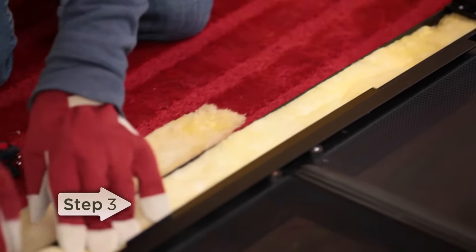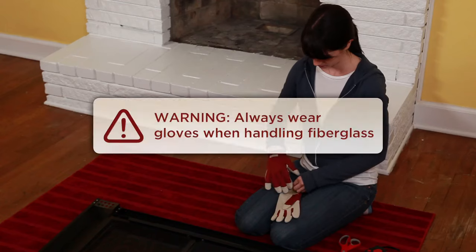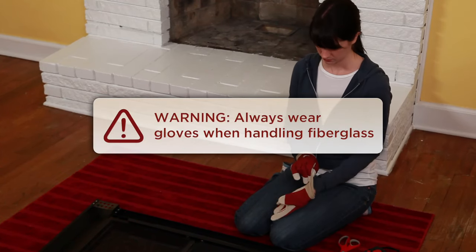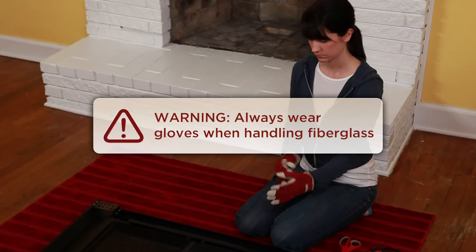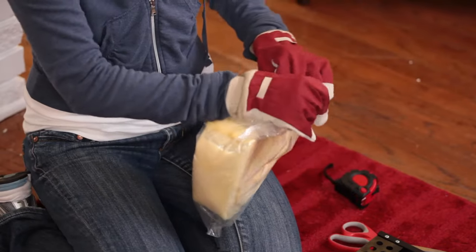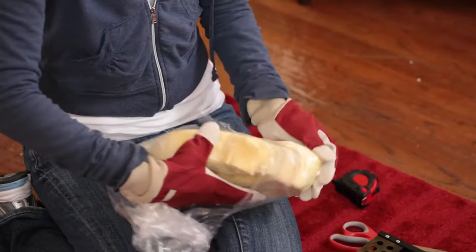Step three, apply the fiberglass insulation. Be sure to wear gloves when applying the insulation to avoid skin irritation. The heat resistant fiberglass insulation is designed to protect the metal finish of your frame. Some parts of the insulation may remain exposed to the inside of the fireplace, which is normal and should not be of concern.